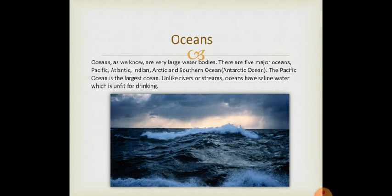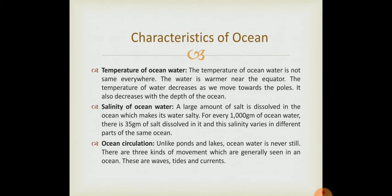The rivers, lakes, streams are the source of fresh water. We will study about the characteristics of ocean. First comes the temperature of the ocean water. The temperature of the ocean water is not same everywhere. The water is warmer near the equator. The temperature of the water decreases as we move towards the pole. It also decreases with the depth of the ocean. Why is the water warmer near the equator? Because it is nearer to the sun.